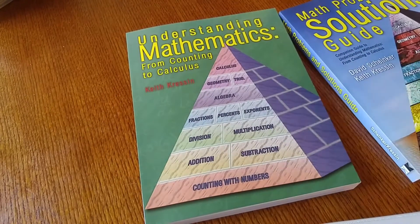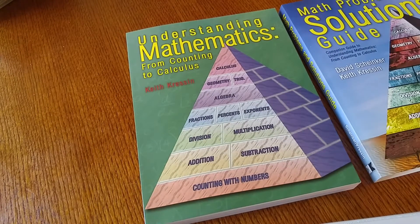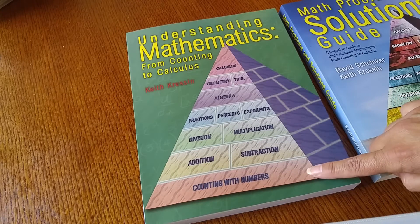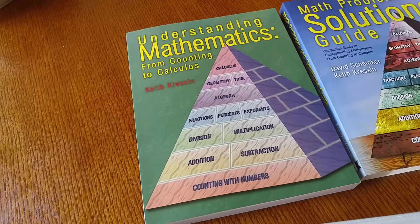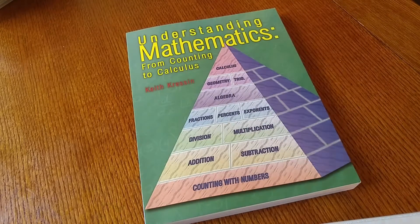So it's one book for all 12 years, which is pretty amazing. It's from counting with numbers and it goes up from addition, subtraction, and so forth to calculus. Let me just move this one out of the way.